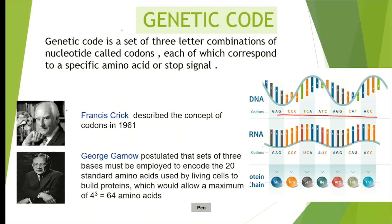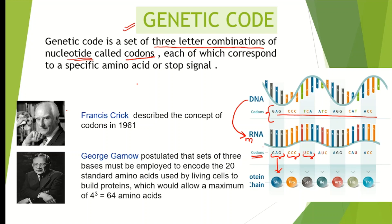First of all we have to understand genetic codes. In DNA, bases are present in a particular sequence which we call genetic information. This genetic information is transferred to RNA through transcription, and in mRNA these nucleotide sequences present in three-letter sets are called triplet codons — code words that code for particular amino acids. We can define genetic code as a set of three-letter combinations of nucleotides called codons, and each of which corresponds to a specific amino acid. Francis Crick described the concept of codons in 1961.